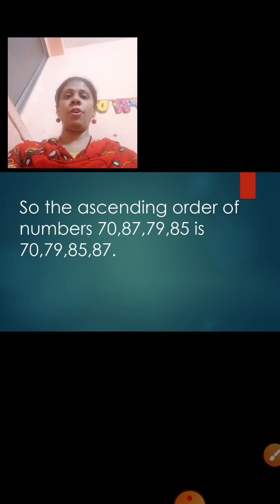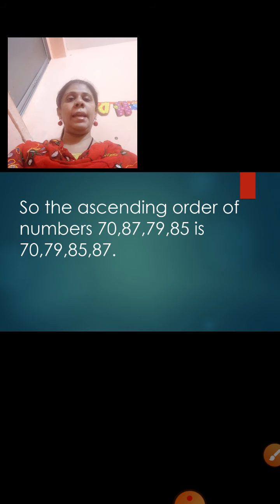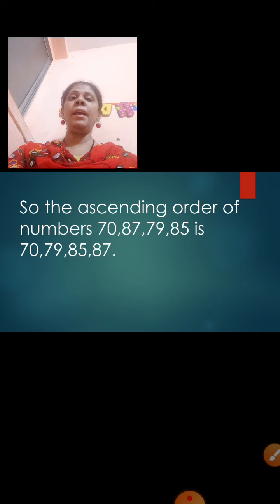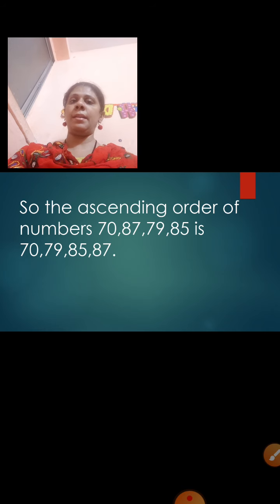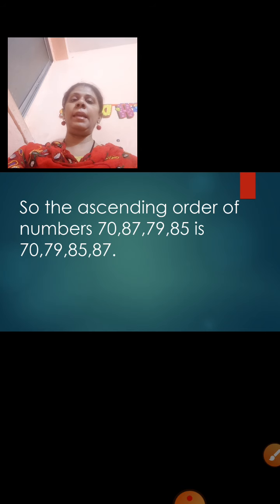So the ascending order of 70, 87, 79, 85 is: 70, 79, 85, and 87. We start with the smallest number 70, then 79 which is smaller than 85, then 85, and finally our largest number 87.